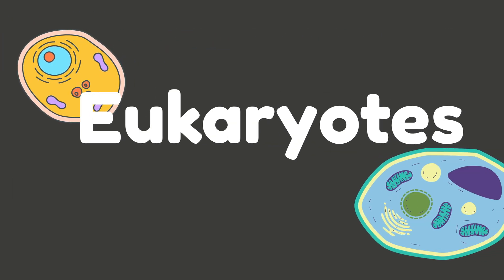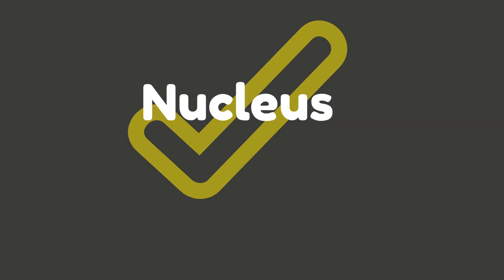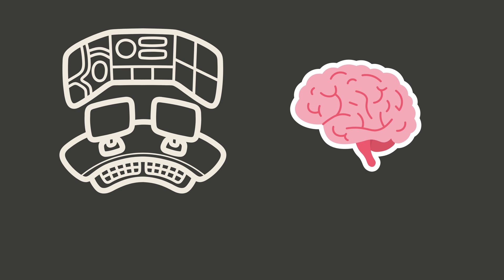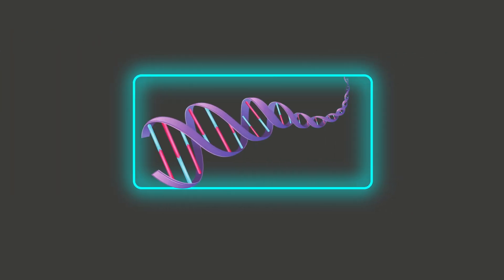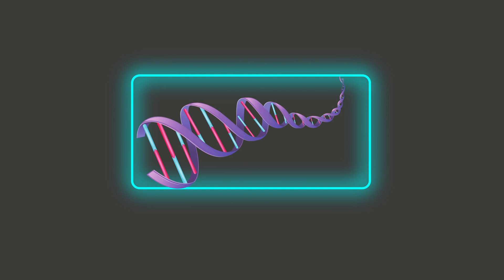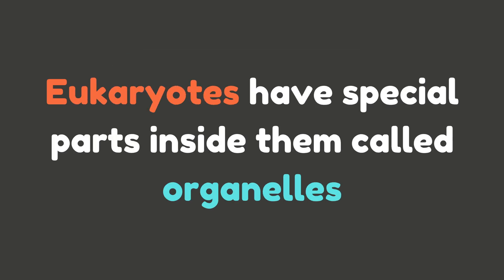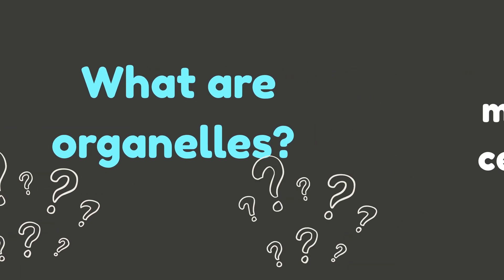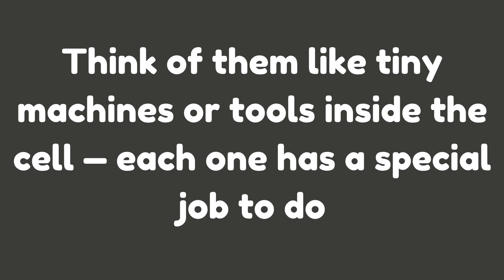Now let's talk about eukaryotes. These are the fancier, more complex cells. The name means 'true nucleus,' and yes, these cells actually have a nucleus — the brain or control center of the cell, where the DNA lives safely inside its own little room. But wait, there's more. Eukaryotic cells have special parts inside them called organelles. Think of them like tiny machines or tools inside the cell, each one with a special job to do.